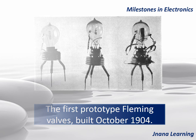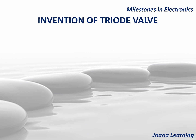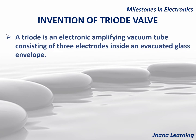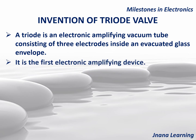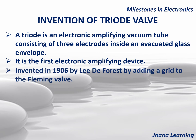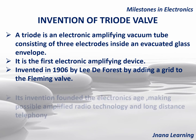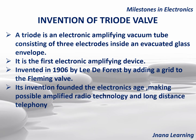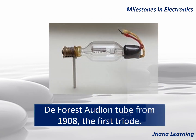The next milestone is the invention of the triode valve. A triode is an electronic amplifying vacuum tube consisting of three electrodes inside an evacuated glass envelope. It is the first electronic amplifying device, invented in 1906 by Lee de Forest by adding a grid to the Fleming valve. Its invention founded the electronics age, making possible amplified radio technology and long-distance telephony.